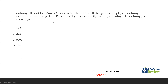Johnny fills out his March Madness bracket. After all the games are played, Johnny determines that he picked 42 out of 64 games correctly. What percentage did Johnny pick correctly? This is a straight percentage question — you need to know averages and percentages. To calculate a percentage, take your smaller number — your 42 — and divide it by the total possible. He got 42 responses correct out of a possible 64.